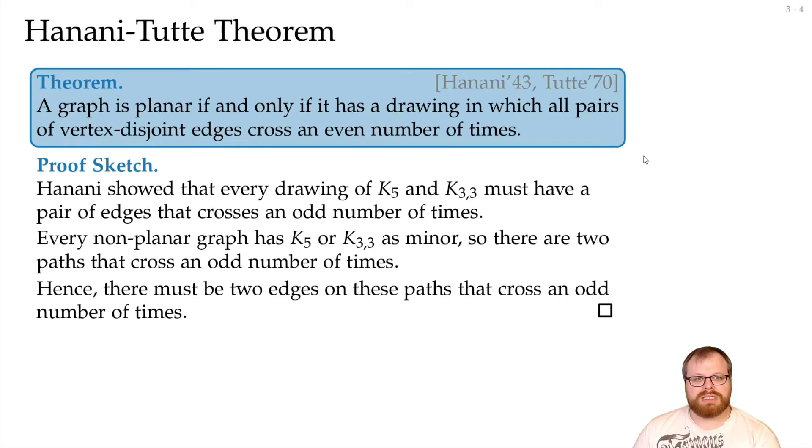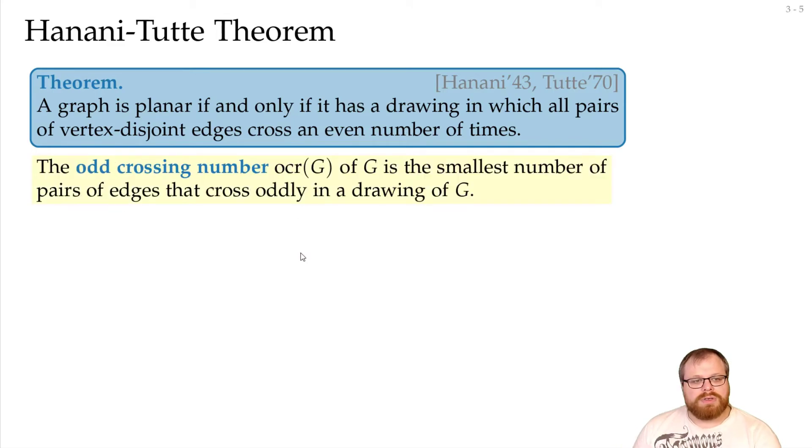That would mean that the number of crossings we require only depends on the number of pairs of edges that cross an odd number of times, because those with even number we can reduce, and those with odd we can reduce to 1.